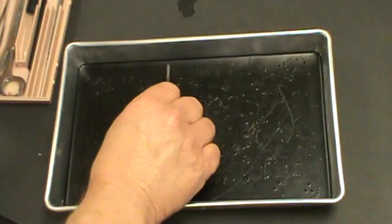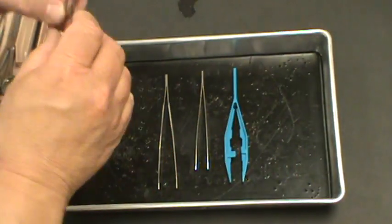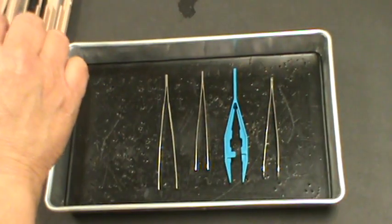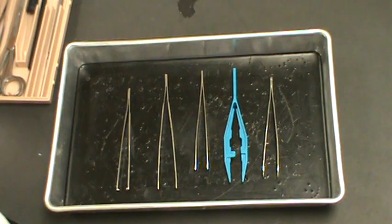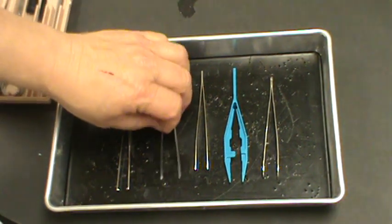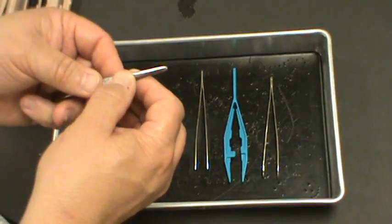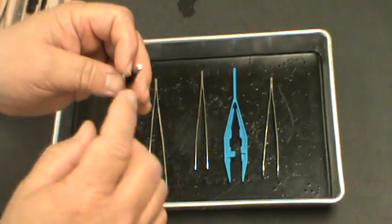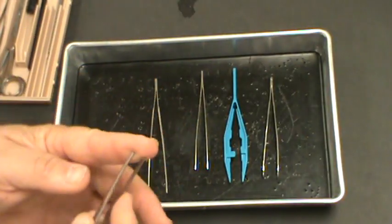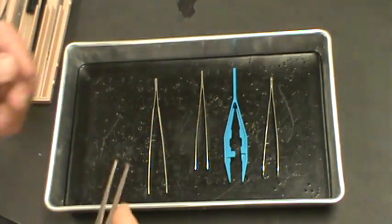The other thing that we have in our kits are called forceps. Now around your house you probably call these tweezers, but in the laboratory and scientifically we're going to call these forceps, and we have several different kinds. What you need to know is the smooth forceps, and the grasping forceps. This has a little tooth here and it's used to grab hold of something so you can pull on it and get it out of the way.